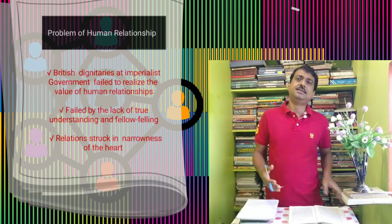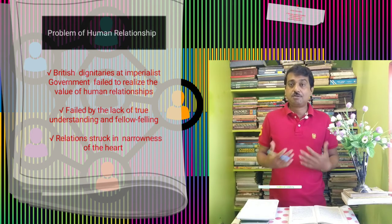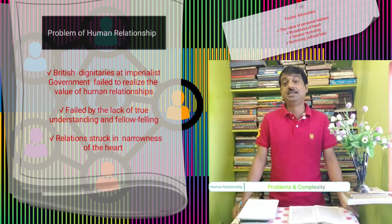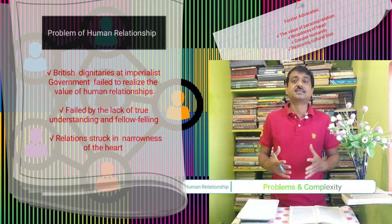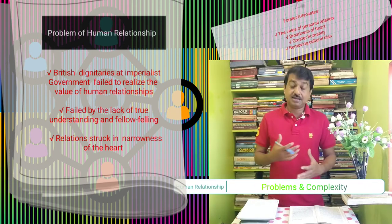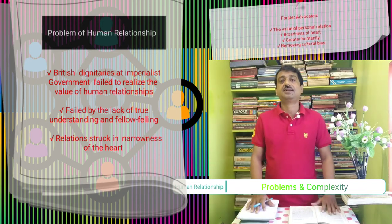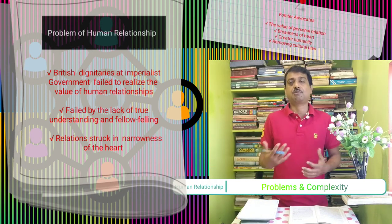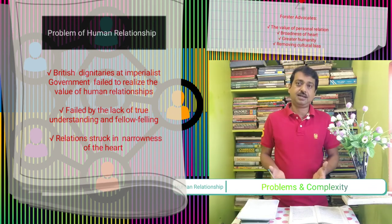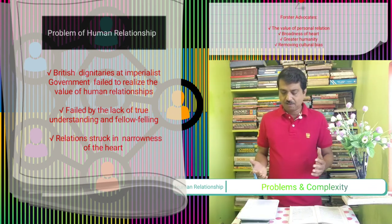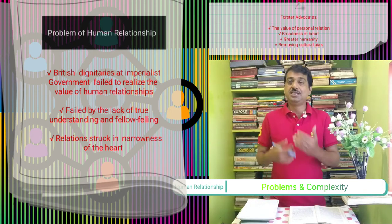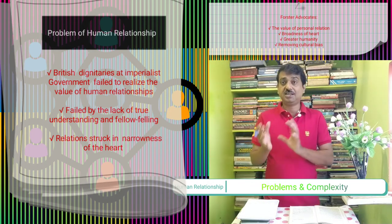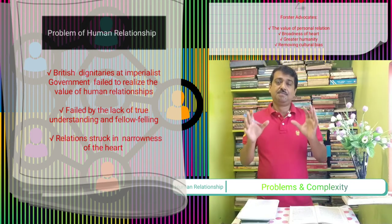A Passage to India is a great work encompassing several significant topics bearing upon society during British rule in India. Forster's greatest contribution lies in the fact that he has raised the problem of human relationship and discussed its pros and cons at great length. He shows how two different cultures — and even within cultures, Hindu and Muslim — are living together. The amalgamation of Christian, Hindu, and Muslim cultures is a major focus.